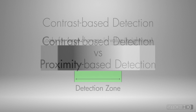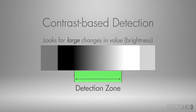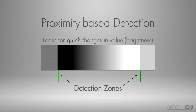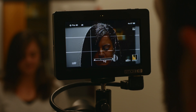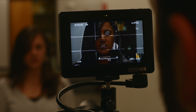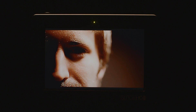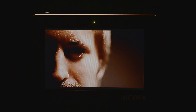The way a focus assist works is determined by a couple of variables that dictate how accurate and how visible the highlighted area is displayed. The first is by looking at the amount of change in contrast in a particular area, and the other is by looking at the proximity at which pixels change in value — meaning if a gray pixel is directly next to a dark gray pixel, this method is active. SmallHD's implementation incorporates more of the proximity-based detection method for its edge highlight.